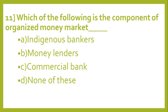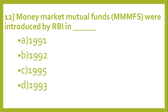Question number 11: Which of the following is a component of the organized money market? Options: A: Indigenous bankers. B: Money lenders. C: Commercial bank. D: None of these. And the answer is C, Commercial bank.